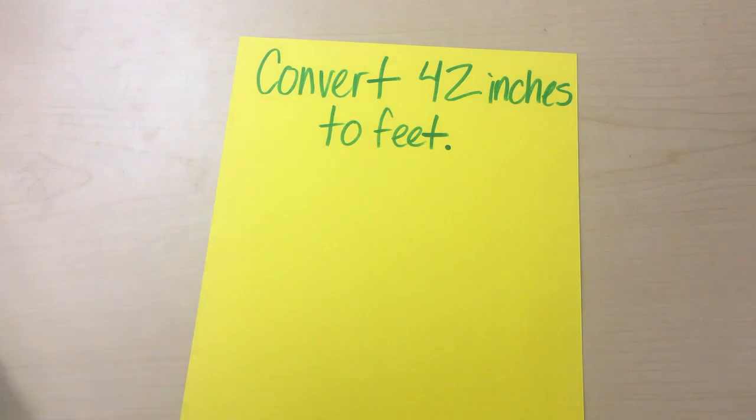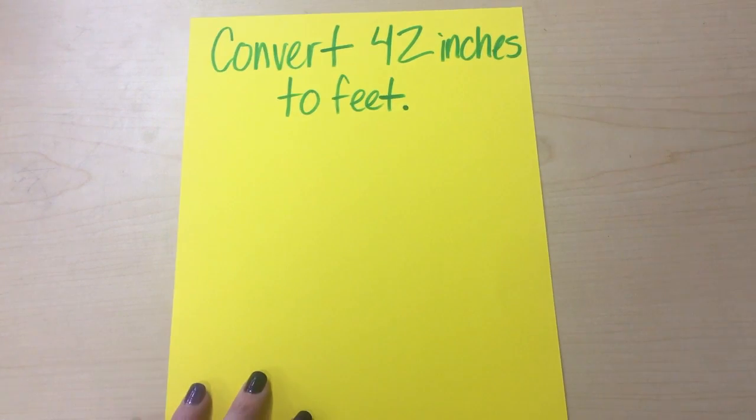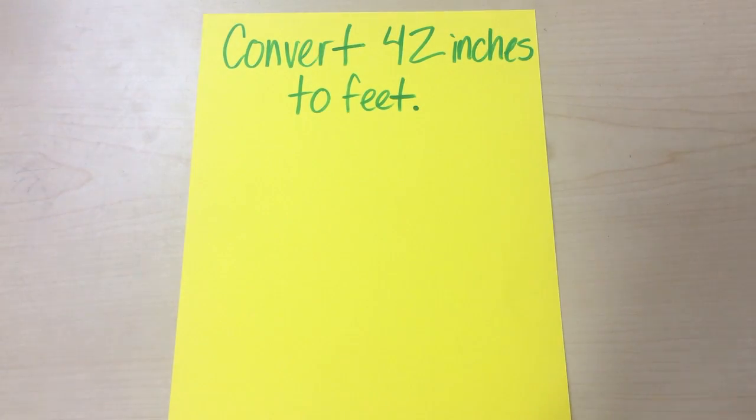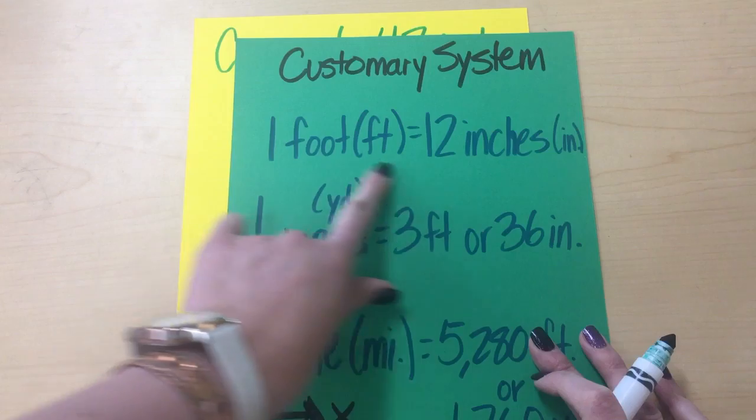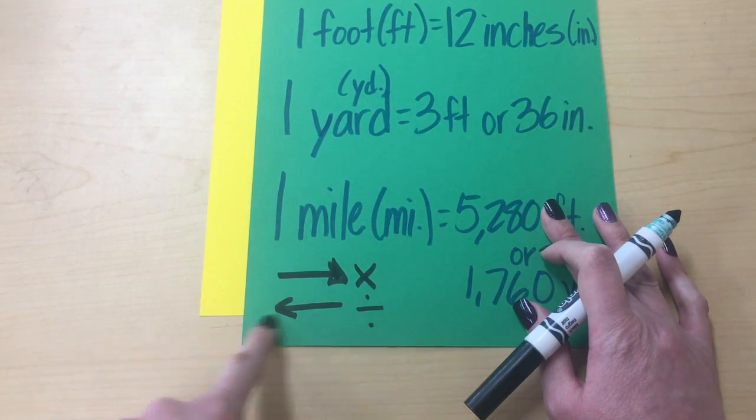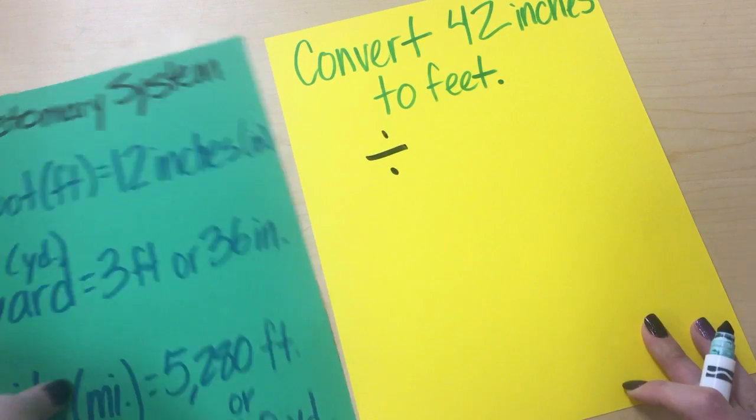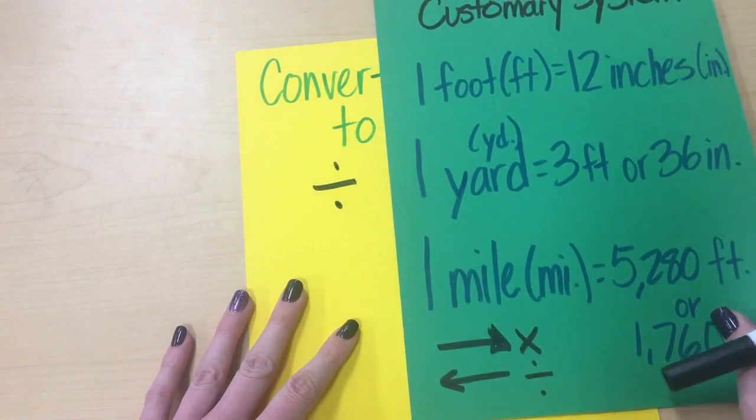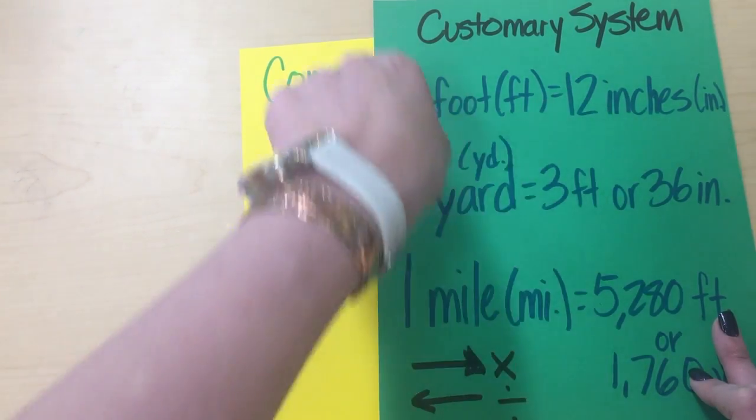This one isn't a story problem. This is just a lot more simple. You're going to convert 42 inches to feet. So we are going to take inches, let's look at our chart here, and we're going to convert it to feet. So we're going this way, so we're going to be dividing. Now we have to think, we're taking a bigger number and making it a smaller number, so we're dividing.